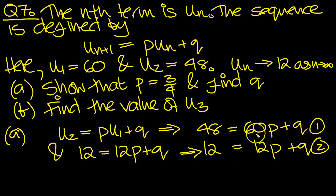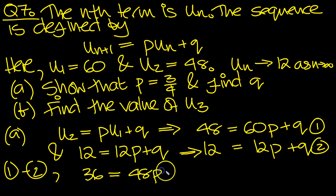Now we'll take them away from one another. We'll do equation 1 minus 2, that way around so we get positives. 48 take 12 is 36, 60 take 12 is 48p, and the q terms cancel. So p is equal to 36 over 48, which is 3/4.